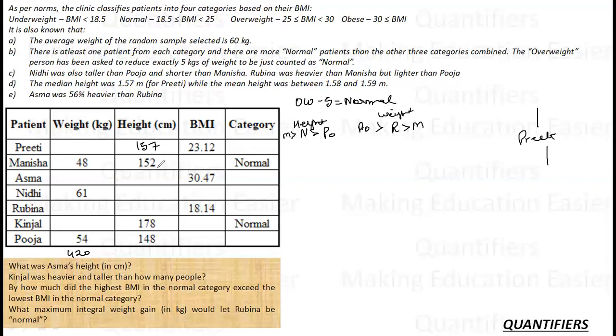While the mean height was between 1.58 and 1.59, so mean height was between 158 and 159. Asma was 56% heavier than Rubina, so Asma was 1.56x if Rubina was x.